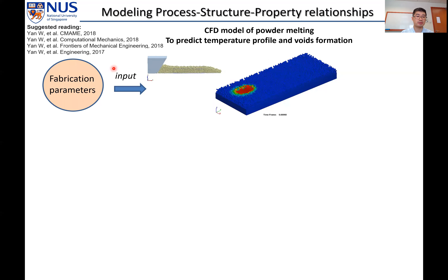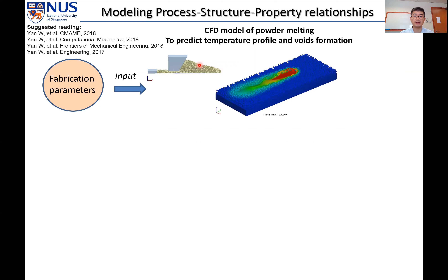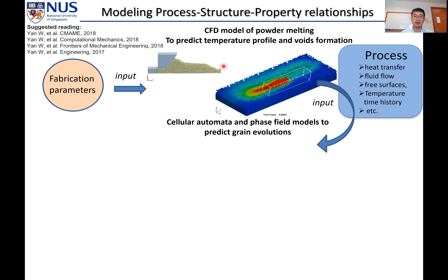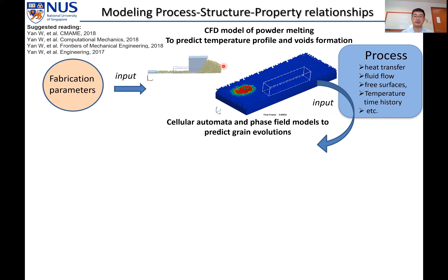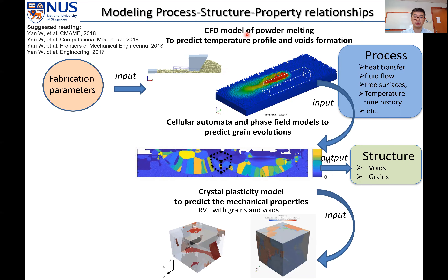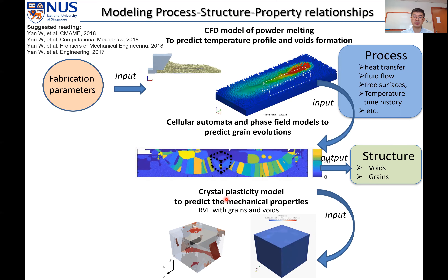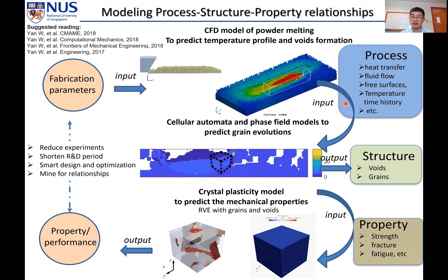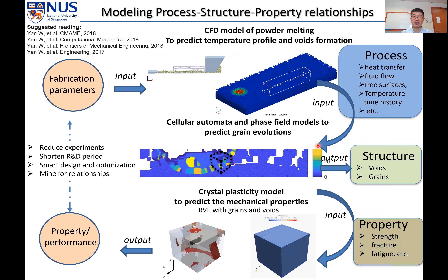When we input fabrication parameters into the process models, we predict powder spreading and powder melting, including the temperature profile and void formation. We then implement this into grain evolution models using either the cellular automaton method or phase field method to predict grain evolution, and then into a crystal plasticity model to predict mechanical properties. With this, we can replace most trial-and-error experiments, including manufacturing experiments, microstructure characterizations, and mechanical tests.